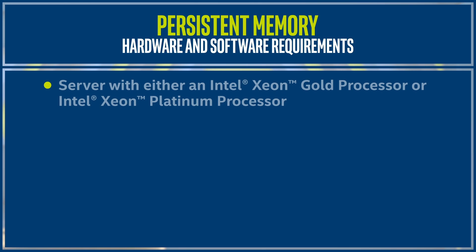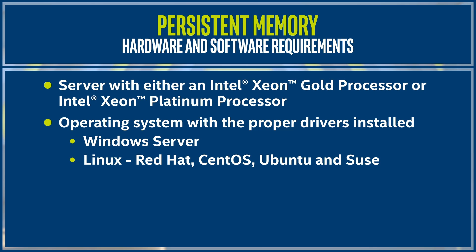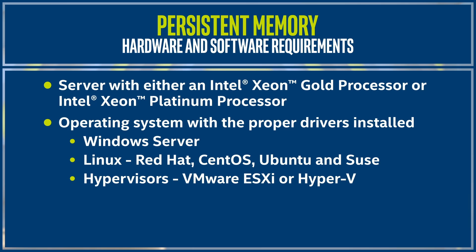Before you can start using persistent memory, you need several hardware and software components in place. First, you need a server with either a gold or platinum model of the next-generation Intel Xeon server CPU — be aware there are some restrictions depending on the CPU model. Second, you need an operating system with the proper drivers. Fortunately, the most common operating systems used in data centers today — such as Windows Server and Linux distributions like Red Hat, CentOS, Ubuntu, and SUSE — as well as hypervisors such as VMware ESXi or Hyper-V, already support persistent memory out of the box.